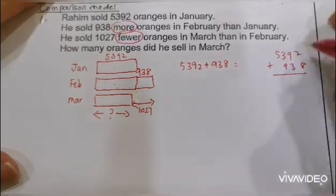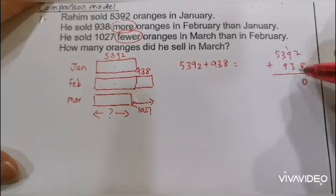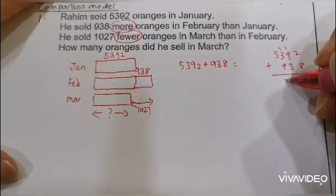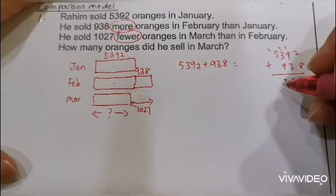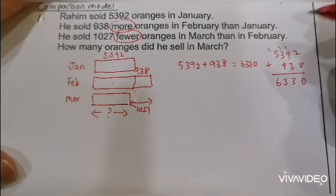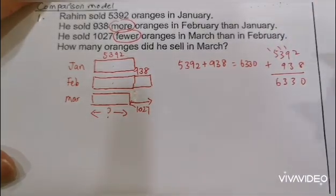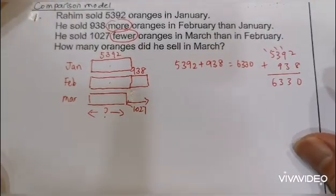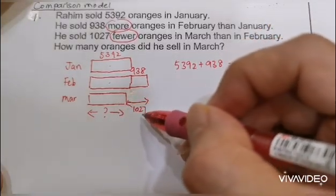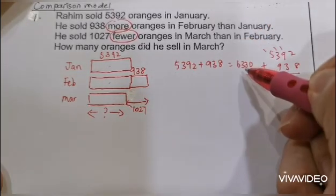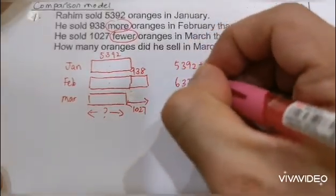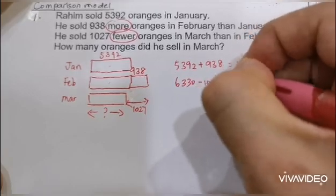Don't forget to do your working by the side. Carrying through the addition gives us 6,330, and this is for February. Now we need to find March, which is 1,027 shorter, so we take away from this amount: 6,330 minus 1,027.